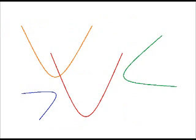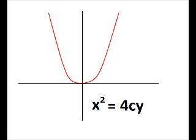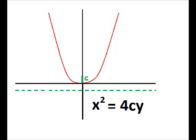Parabolas are different and that's no lie. The U-shaped ones are functions. x squared equals 4cy. C's the distance from vertex to focus and also from vertex to directrix.